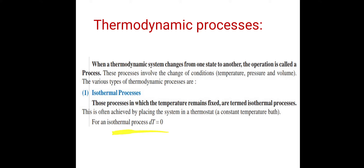For an isothermal process, the change in temperature is denoted by ΔT, where ΔT = T2 − T1. Since temperature remains fixed, T1 and T2 are the same — there is no change in temperature. So ΔT is equal to 0 for an isothermal process.